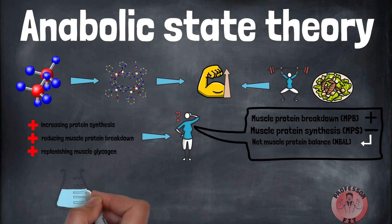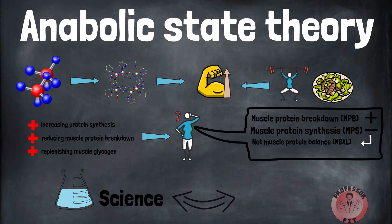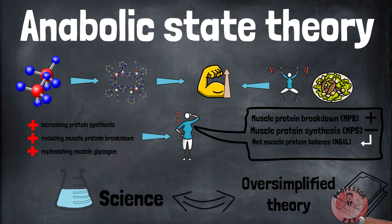After exercising, it might seem logical to immediately eat protein and carbs to suppress MPB. It's also assumed that this will increase muscle mass by increasing NBAL. That's where the theory oversimplifies the science. Changes in muscle size depend on myofibrillar proteins. To increase muscle mass, the suppression of MPB would need to solely target these proteins. However, MPB affects many types of proteins.